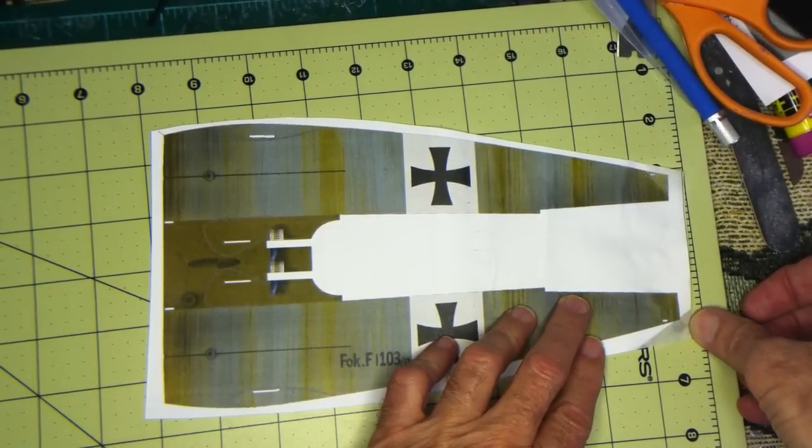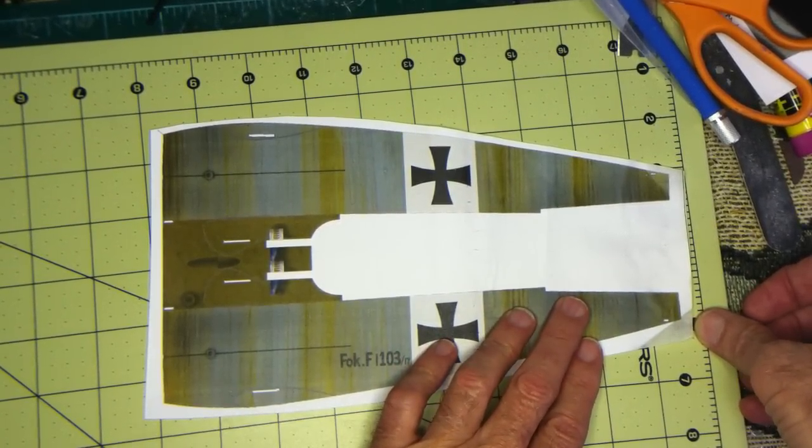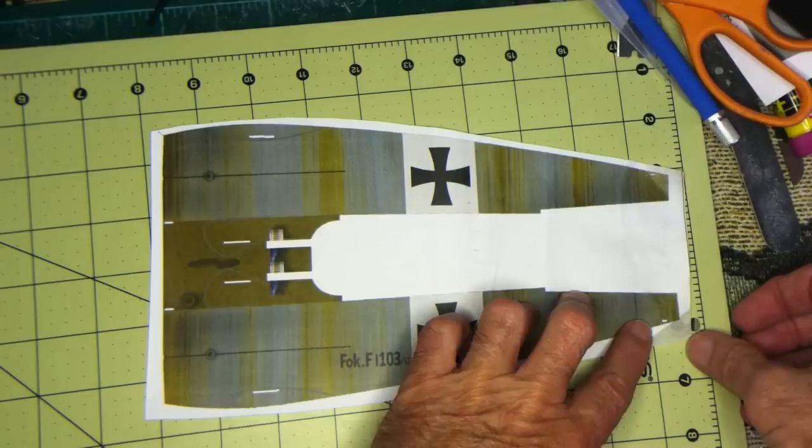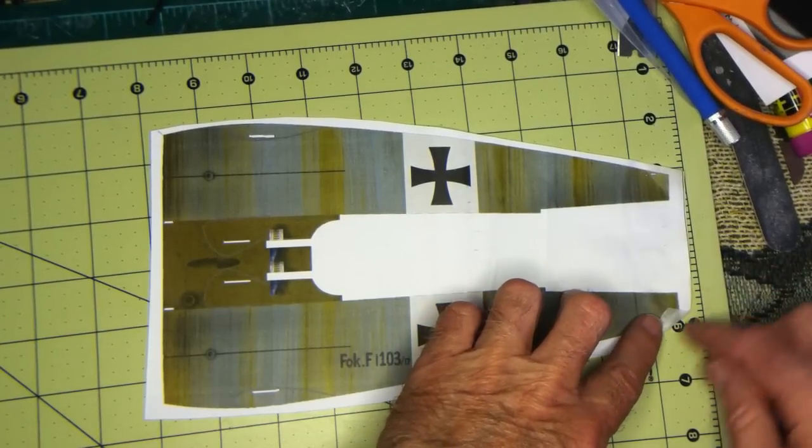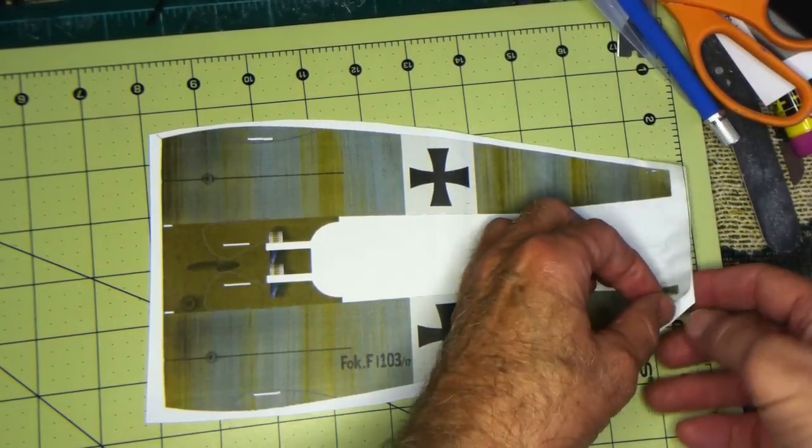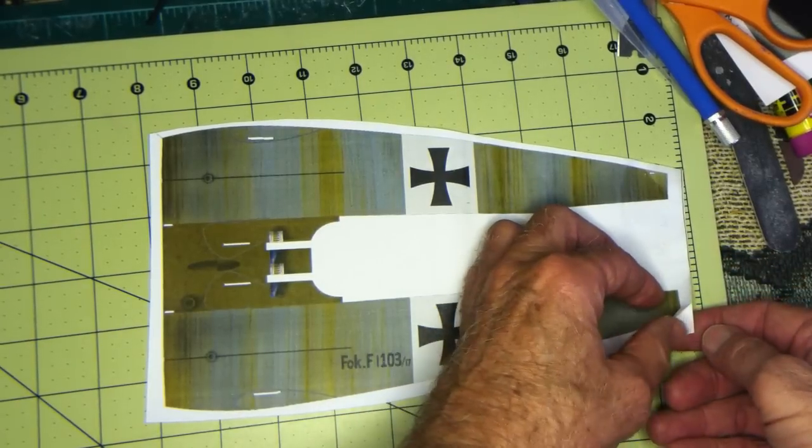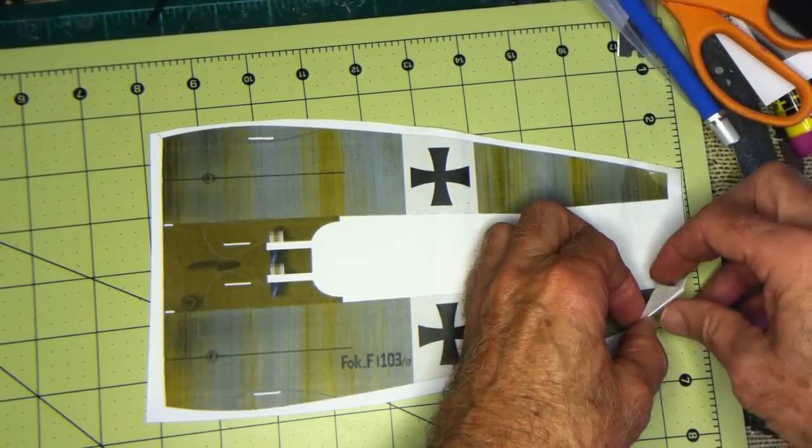Hey Pete, I just wanted to show you how I peel the tissue off the backing paper. First of all, pull back a little corner of the tissue to expose the paper.